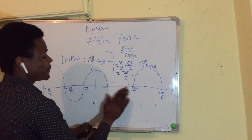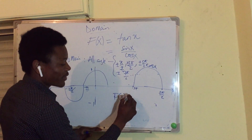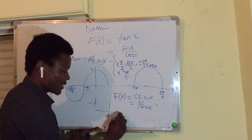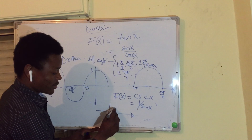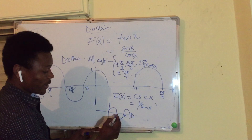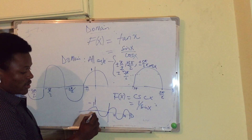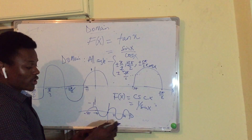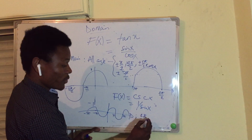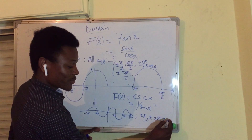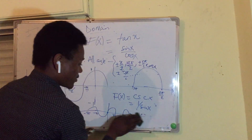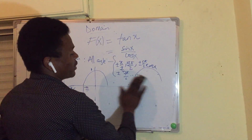You can also try to find the domain of cot(x) or csc(x). For those, you need to know the graph of sine(x). The graph of sine(x) starts from zero, and is zero again at π, 2π, 3π, and in the negative direction at -π, -2π, -3π, and so on.